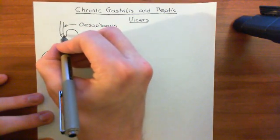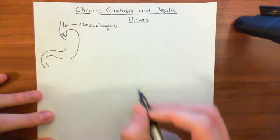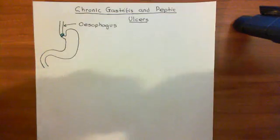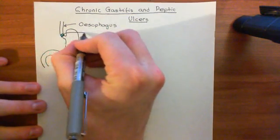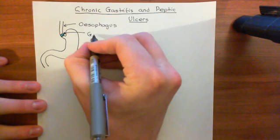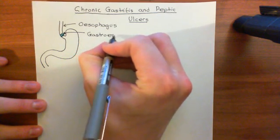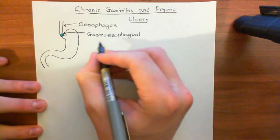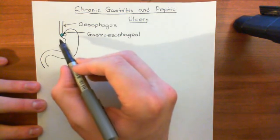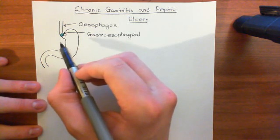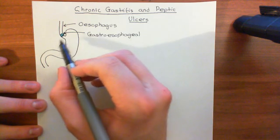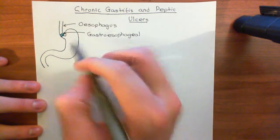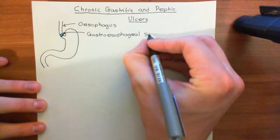There's a special sphincter between the esophagus and the entrance to the stomach. I'll colour this sphincter in blue — this represents the gastroesophageal sphincter. A sphincter is just a thickening of the circular smooth muscle that surrounds the esophagus. This circular smooth muscle can contract, causing constriction and narrowing of the lumen, effectively acting as a gate closing off the junction between the esophagus and the stomach.